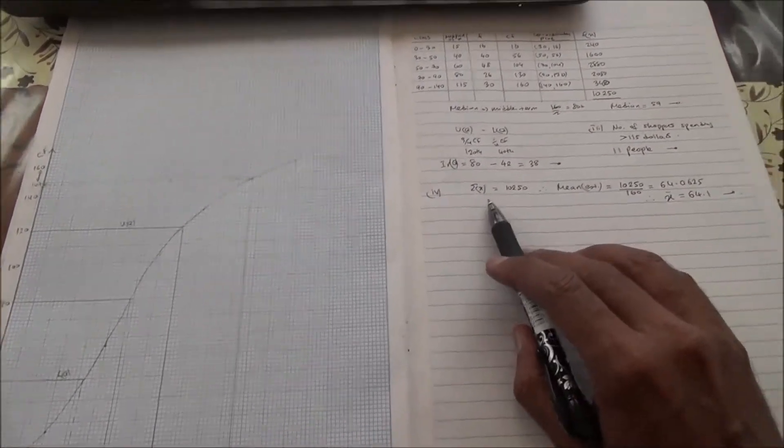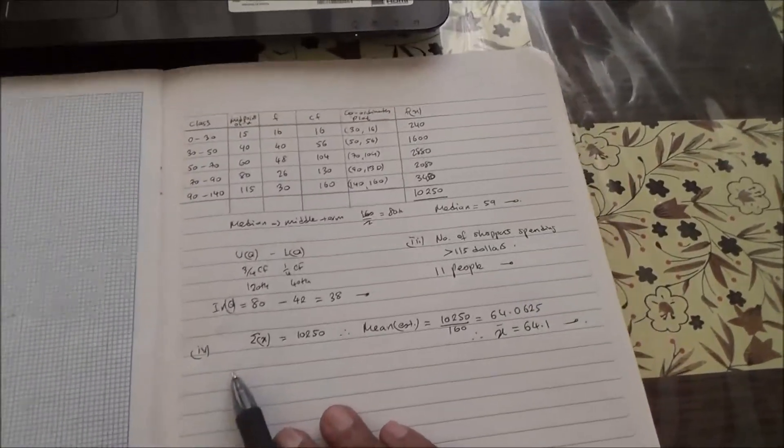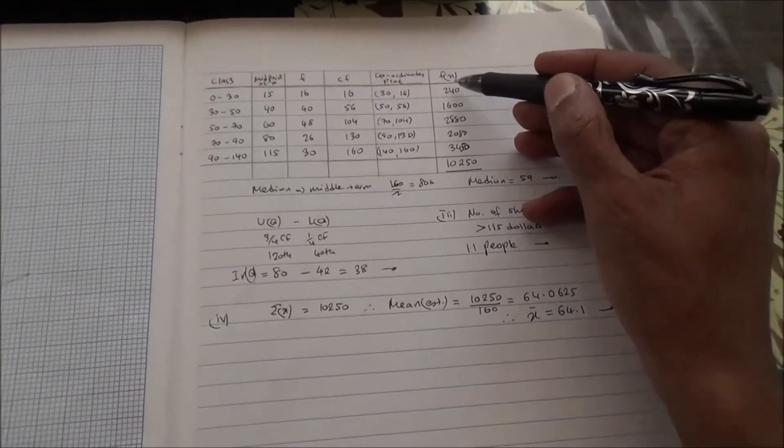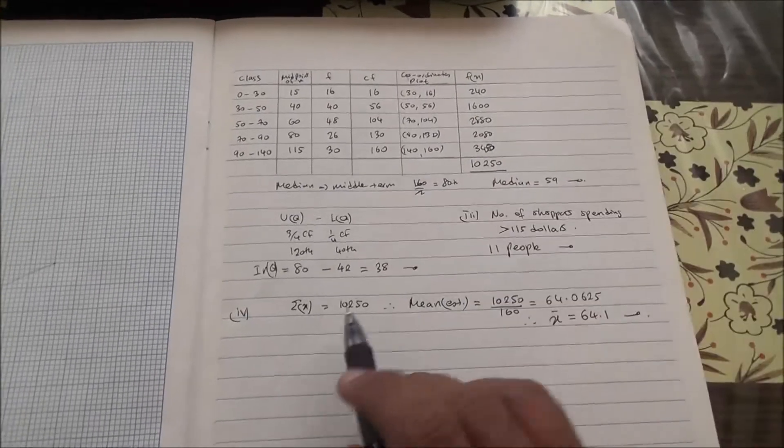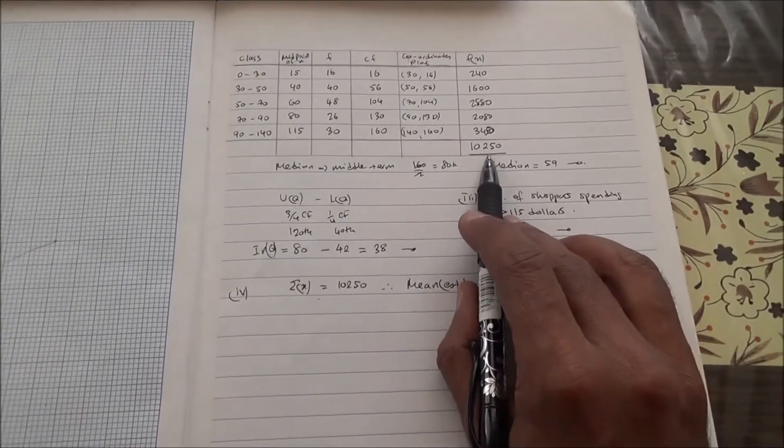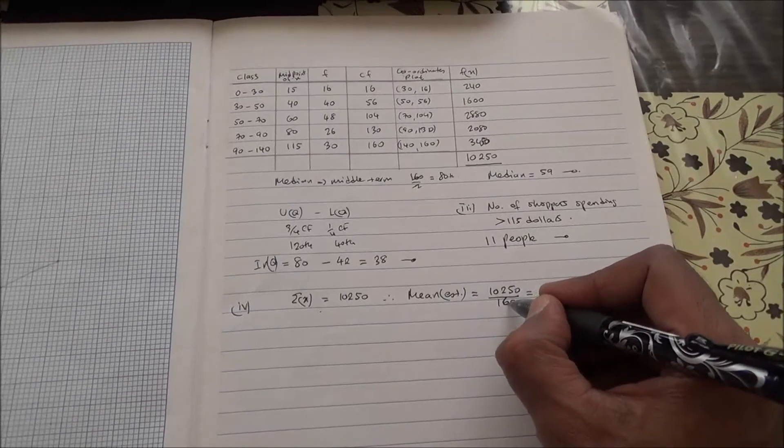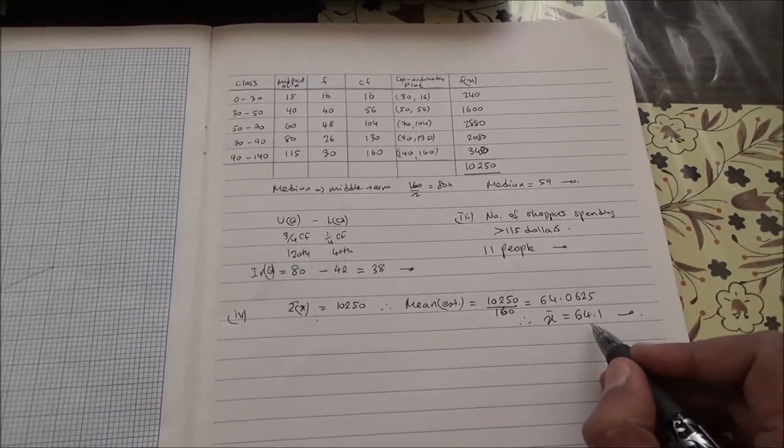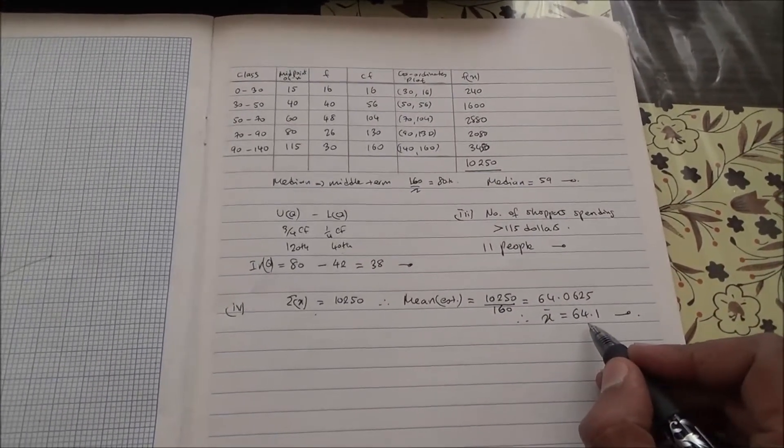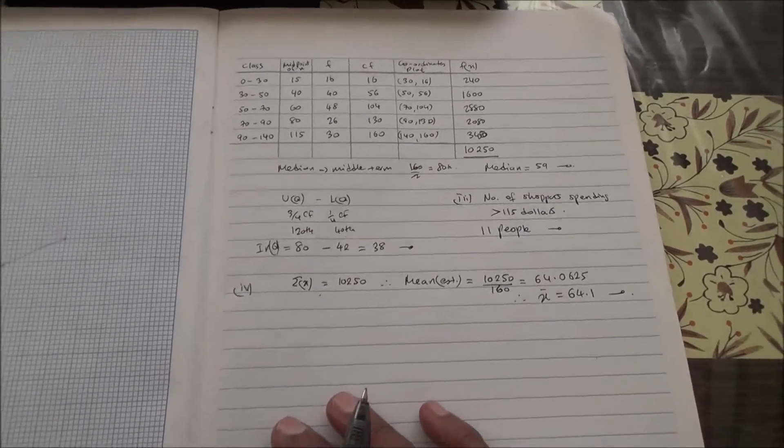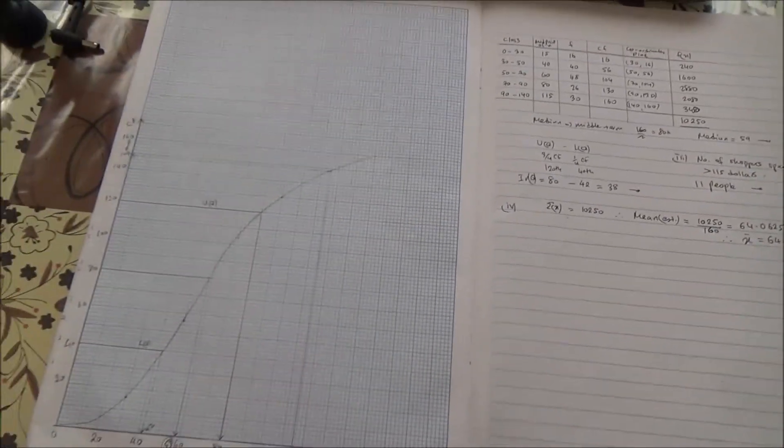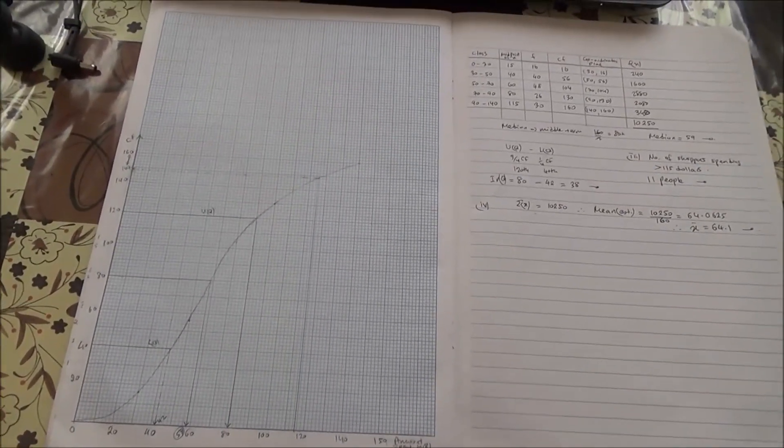And for the summation of fx, as I have already explained to you, you just take the sum of fx here. The summation of fx is going to come to 10,250, and you divide by 160 from your calculator. You're going to end up with $64.1 for the mean. Here we are for this question. Take care. I hope that's been of some help to you.